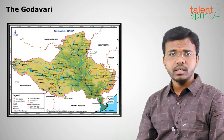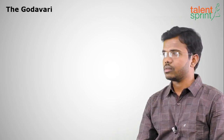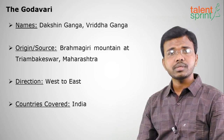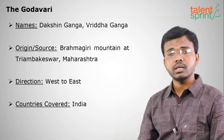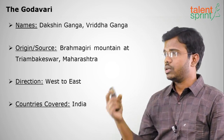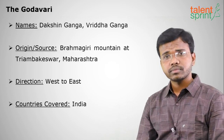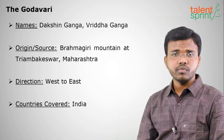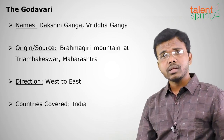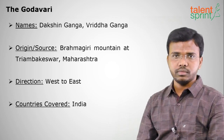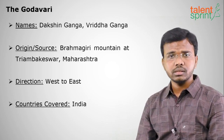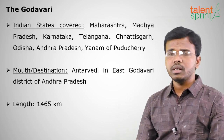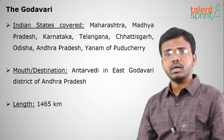The Godavari is the second largest river in India after the Ganges. The other names of the Godavari are Dakshin Ganga or Vridha Ganga — particularly Vridha Ganga is what the people of Maharashtra call it. The origin or source of the Godavari is the Brahmagiri mountain at Triyambakeshwar in Nasik, Maharashtra. Direction is from west to east.